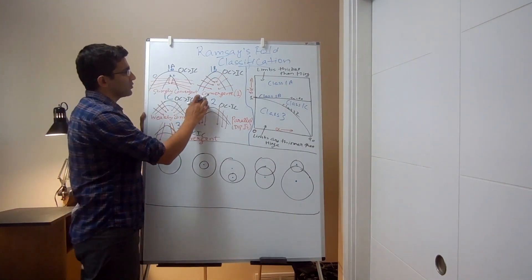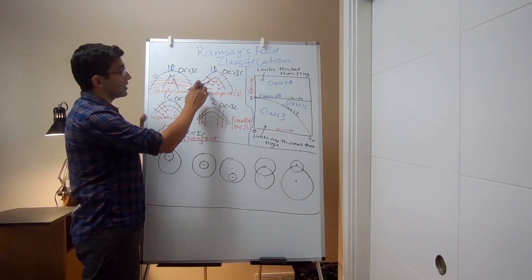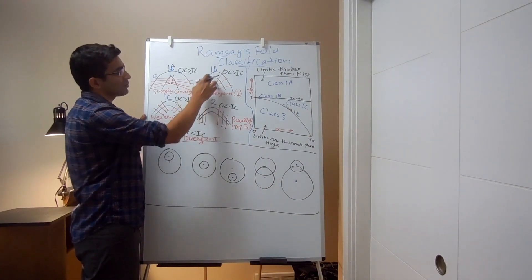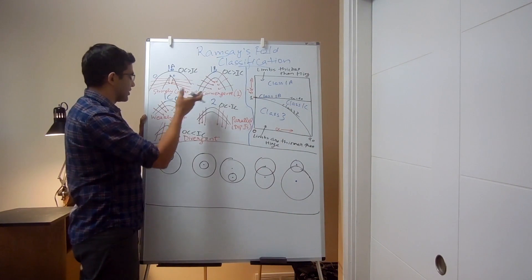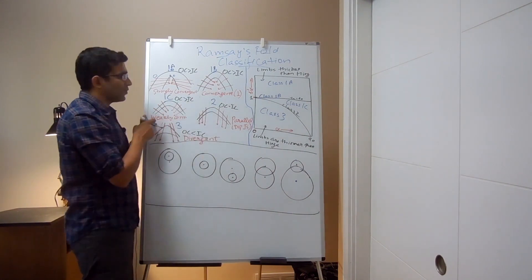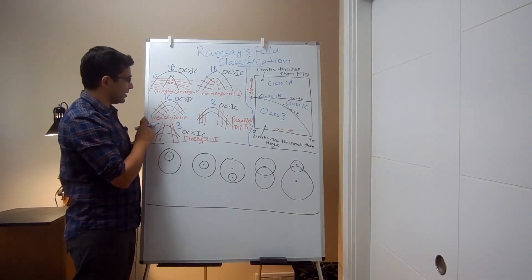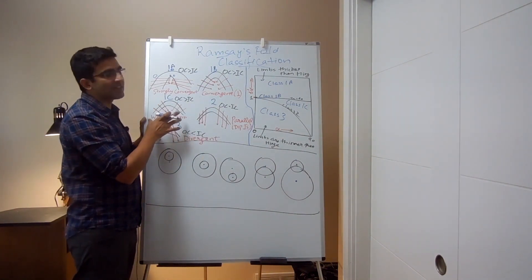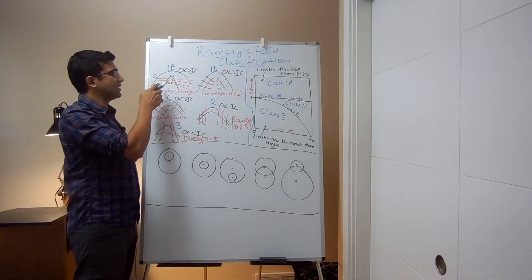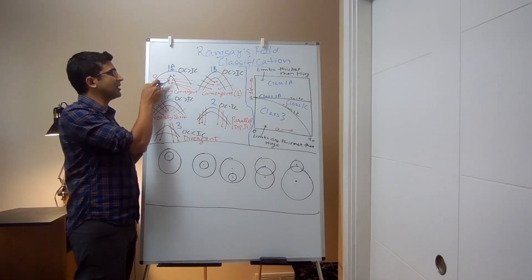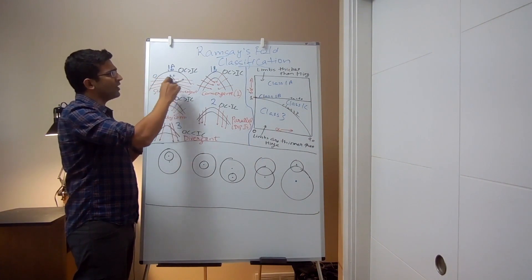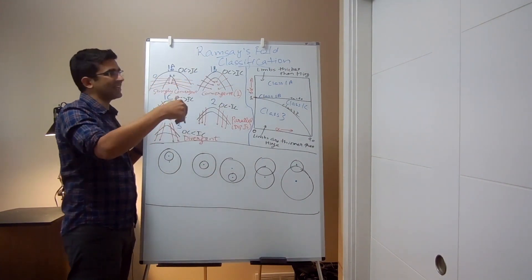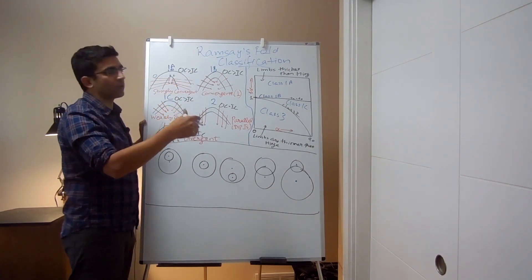Similarly for class 1b, all dip isogons are perpendicular to the fold surfaces and again they are convergent. For class 1c, they are still convergent but weakly convergent. In class 1a the arrows point slightly upwards, whereas in class 1b and 1c they point slightly downwards.